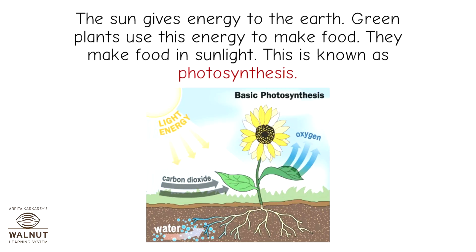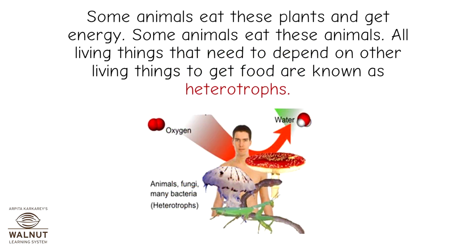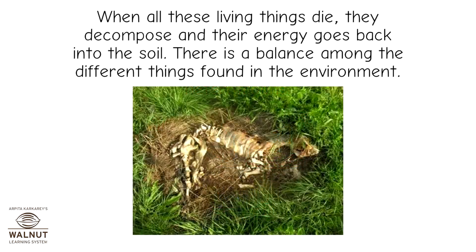The sun gives energy to the earth. Green plants use this energy to make food. They make food in sunlight; this is known as photosynthesis. Since they make their own food, they are called autotrophs. Some animals eat these plants and get energy, and some animals eat those animals. All living things that need to depend on other living things to get food are known as heterotrophs. When all these living things die, they decompose and their energy goes back into the soil.